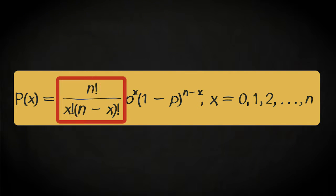This entire first term in the formula gives the number of ways you can select x elements, disregarding their order, from a set of n elements. It is also called the binomial coefficient and is sometimes written in this way.